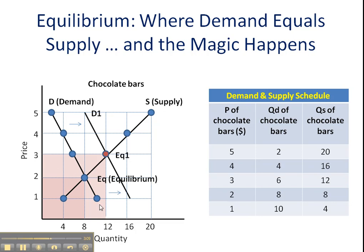We've seen a change in market revenue — that would now be $3 times 12 for a total of $36, which again would be shared among the firms in this market supply curve. This is how we graph a situation where we've seen an increase in demand, changing our equilibrium price from EQ to EQ1.